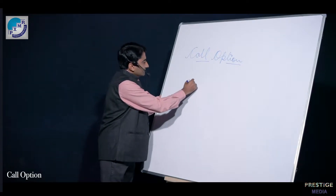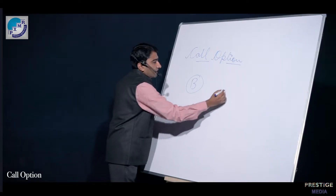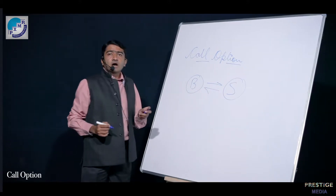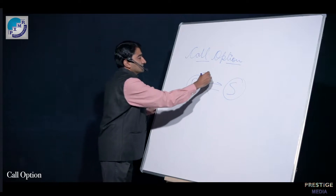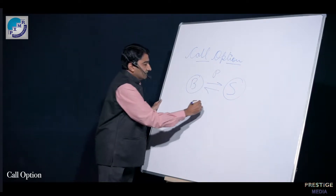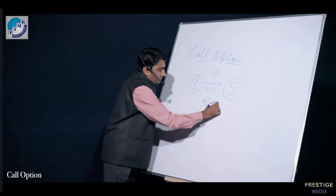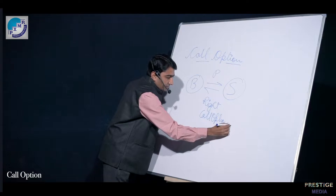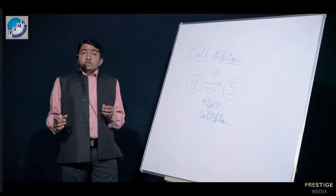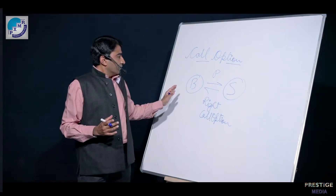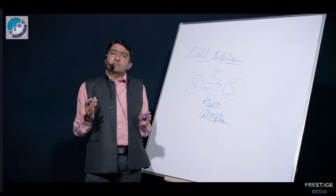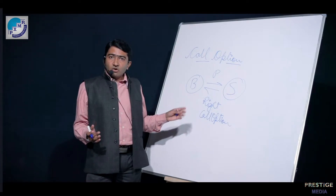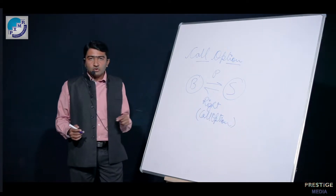Now there are two parties — the buyer and the seller. The buyer pays a premium to the seller, and the seller gives the call option to the buyer. When the buyer has paid a premium, which is the price of the option, the seller gives the right or the call option to the buyer.